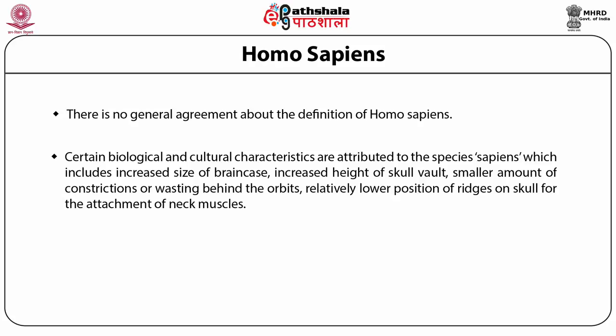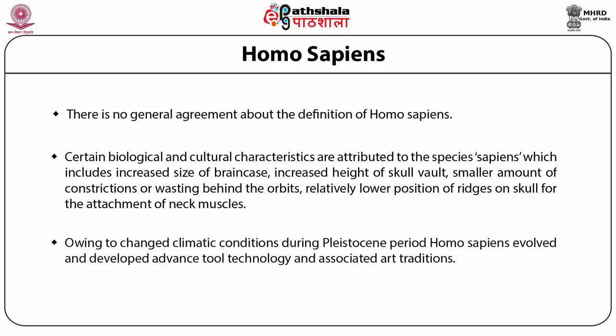Post-cranial features include straighter long bones with less articular surface for the attachment of muscle. Bones are thinner than in Neanderthals. Sockets of femurs are further forward with less powerful grip. Owing to changing climatic conditions during the Pleistocene period, Homo sapiens evolved and developed advanced tool technology and associated art tradition.